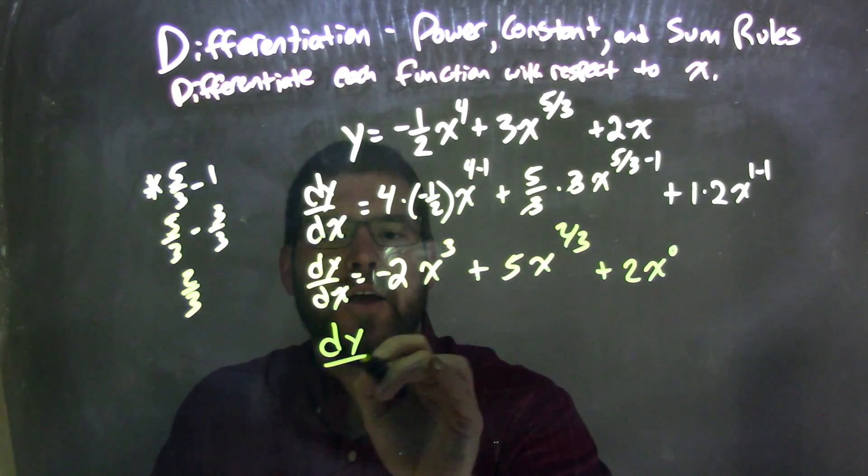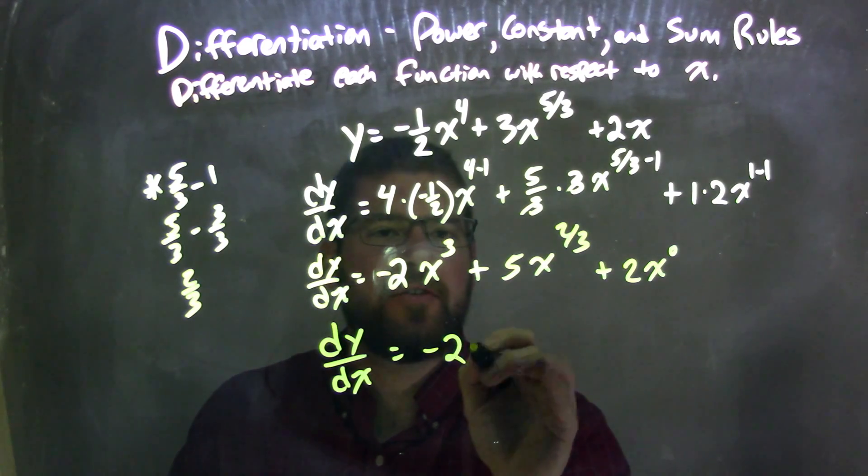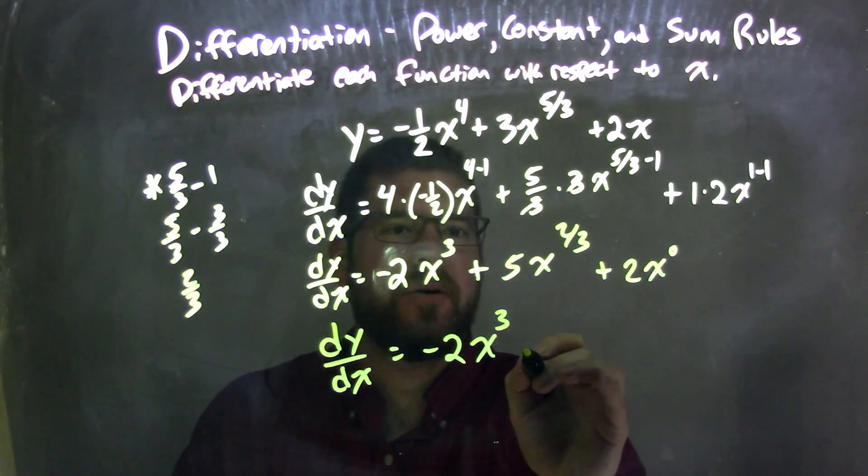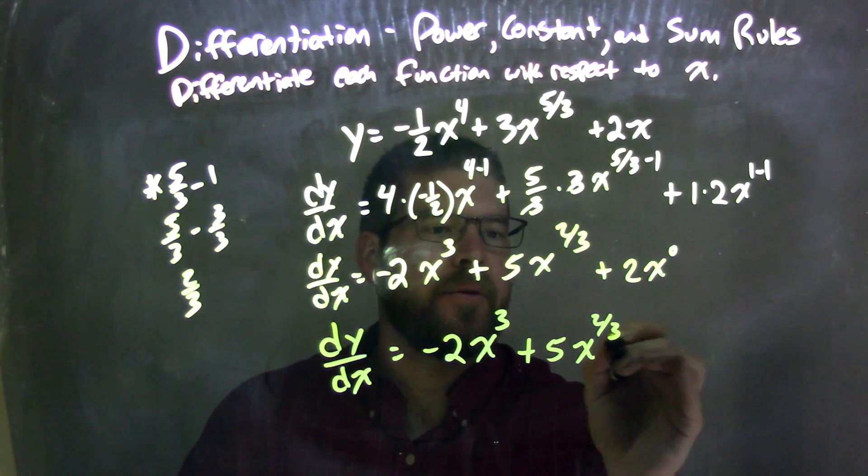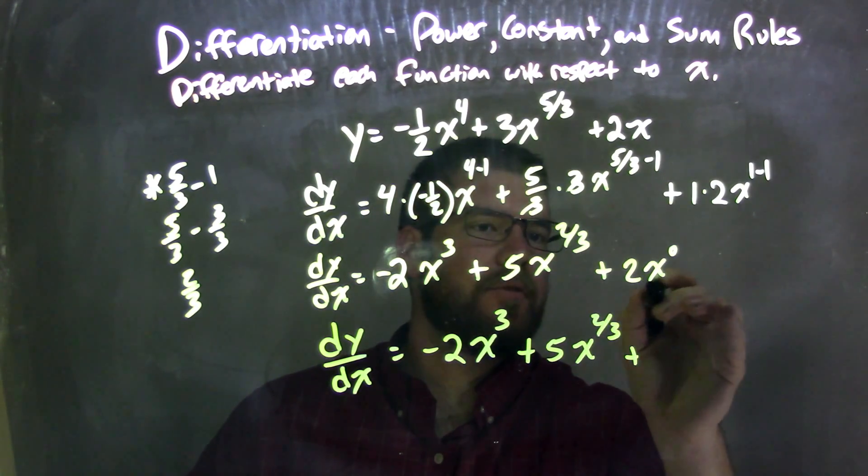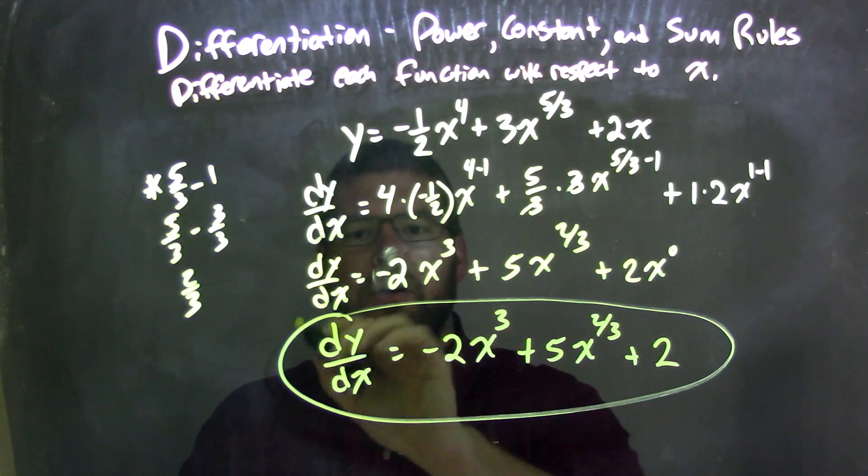We have dy dx is equal to negative two x to the positive third power, plus five x to the two-thirds power, plus two, or x to the zero is one, so we just have a two right there, and there we have our final answer.